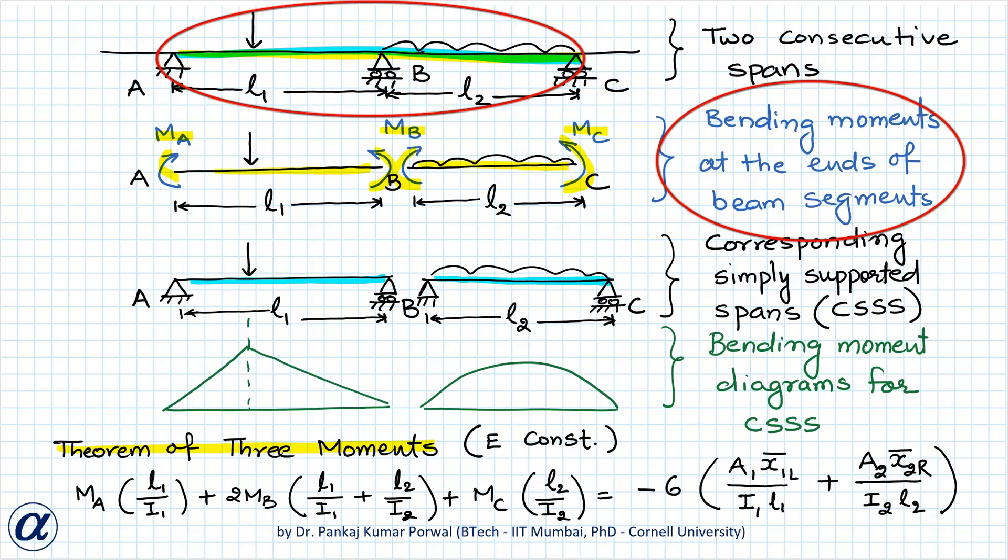The statement is MA L1 upon I1 plus 2MB L1 upon I1 plus L2 upon I2 plus MC into L2 upon I2 equals to minus 6 into A1 X1 L bar divided by I1 L1 plus A2 X2 R bar divided by I2 L2. And here note that MA, MB, MC are bending moments at cross sections A, B and C.